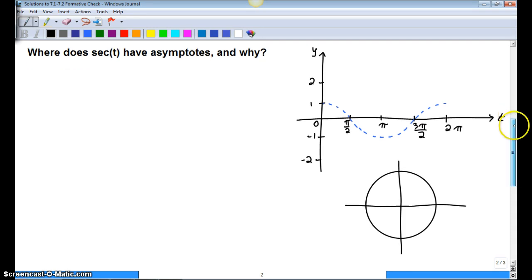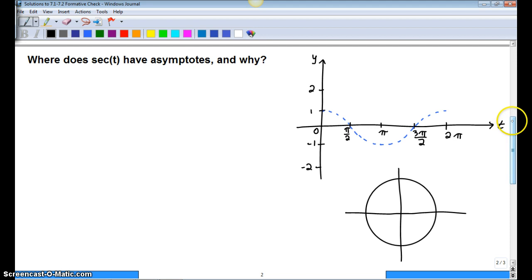So when we talk about secant, cosecant, cotangent, we can define, like in this case, secant of t is really just 1 over cosine of t.